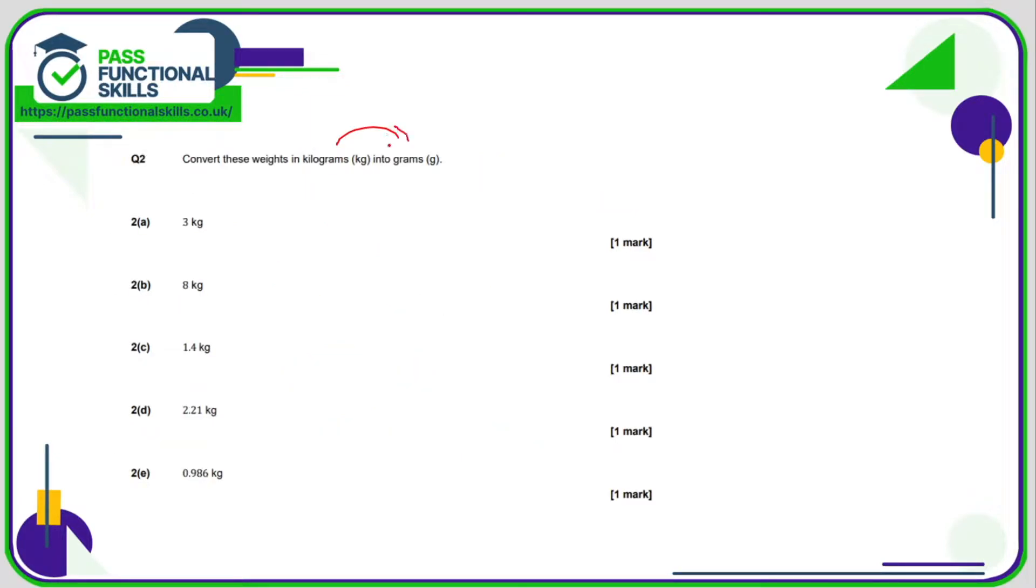Kilos into grams we are now going to be multiplying by 1,000. So if it's a whole number just stick three zeros on the end. Nice and easy. 1.4. What you might want to do is write 1.4 with several zeros to the right. Multiplying by 1,000 means we're going to move the decimal point three positions and this time to the right. So 1, 2, 3 because you want to make the number bigger. So the answer is 1,400.